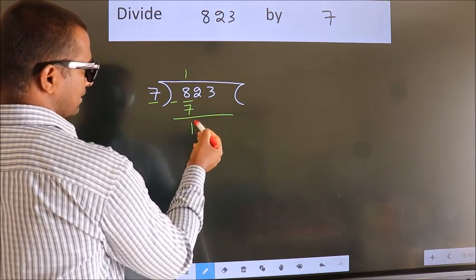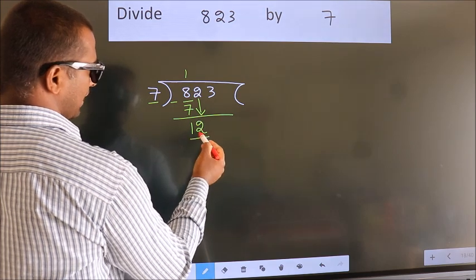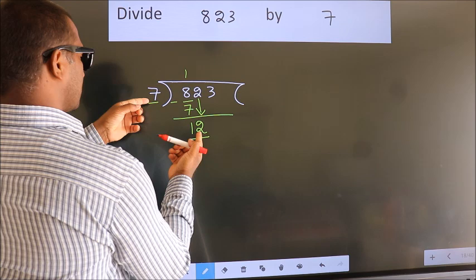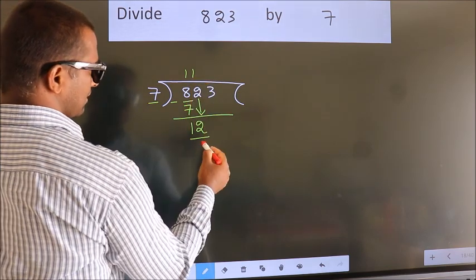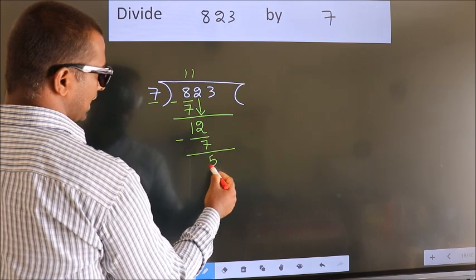After this, bring down the next number. So 2 down. So 12. A number close to 12 in the 7 table is 7. Now we subtract. We get 5.